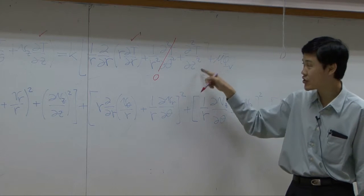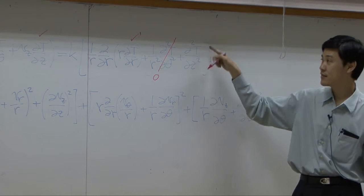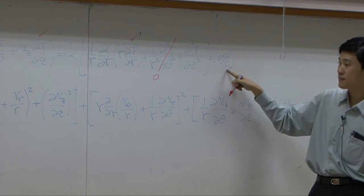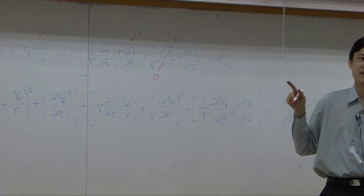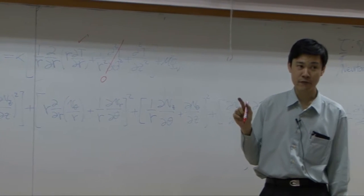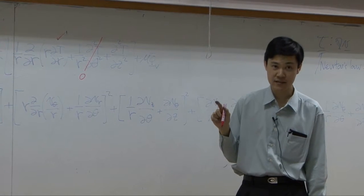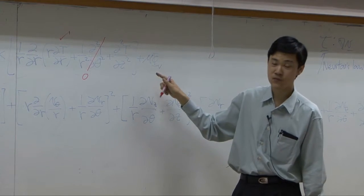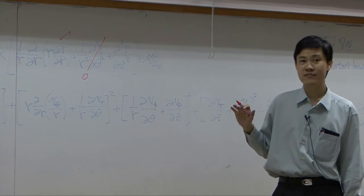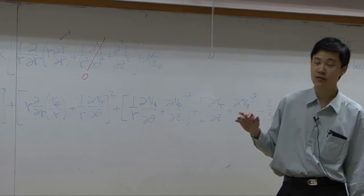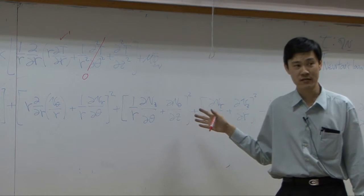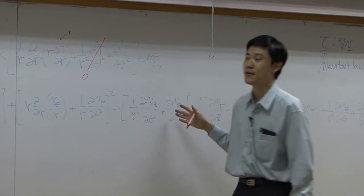T does change with respect to Z, so this term is kept. For the viscous heat term, if you assume that the flow is not fast enough for viscous heat, you can drop the whole term. But if you are not sure whether or not we should drop this term, just keep it for the moment.